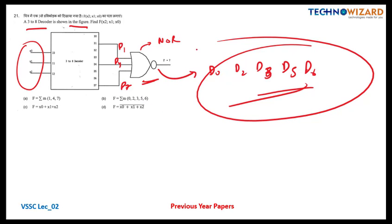If you can't understand from this concept, you can simply solve by taking D0 as A-bar B-bar C, D1 as A-bar B C-bar, and solve it that way. So option B is the correct answer: F is equal to summation of 0, 2, 3, 5, 6. Now question number 22: in a microprocessor, wait states are used to interface slow peripherals to the processor — option C or D is the correct answer.